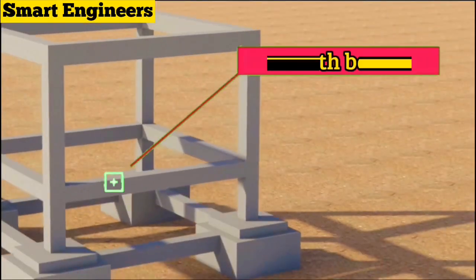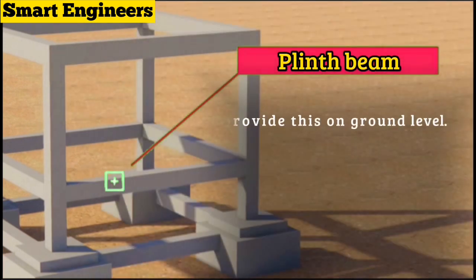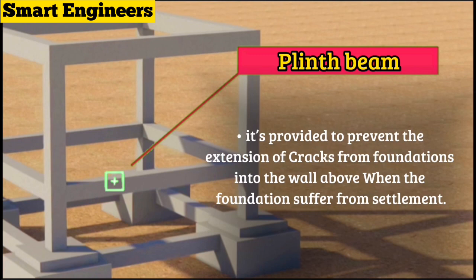Above the tie beam, we can see the plinth beam. Plinth beam is the ground level beam, provided on the plinth level or on the ground level. What is the purpose and function of plinth beam? Plinth beam is provided to prevent the extension of cracks from foundation into the wall above when the foundation suffers from settlement.